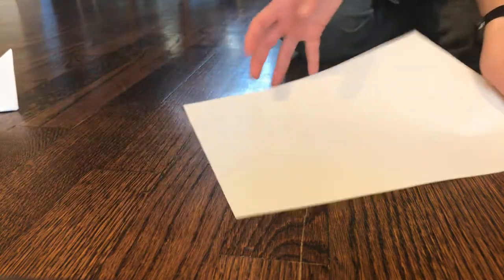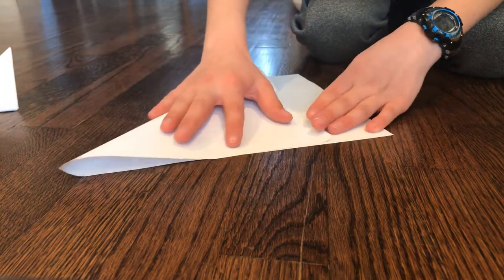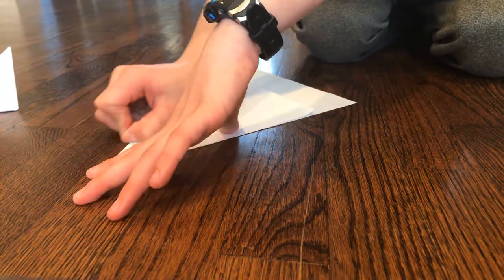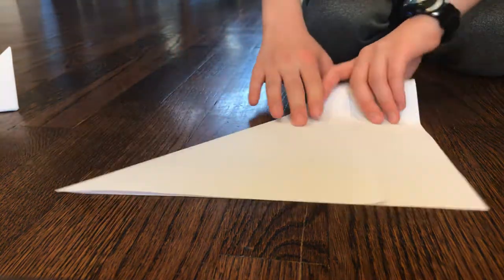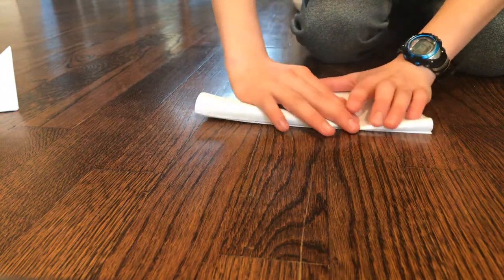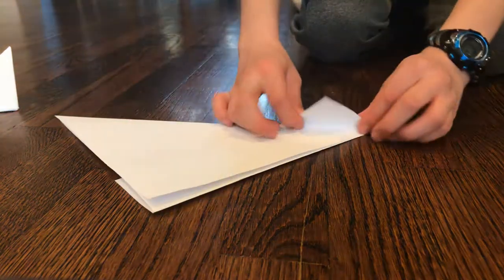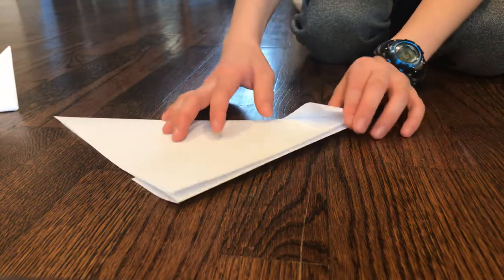Then repeat the same thing on the other side. I'm going to show you again. So you're going to fold the side like this. Flip over. Fold like this. Flip over. Fold like this. Make sure you crease everything.